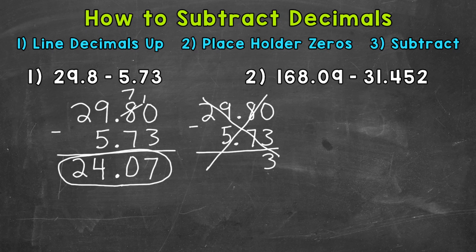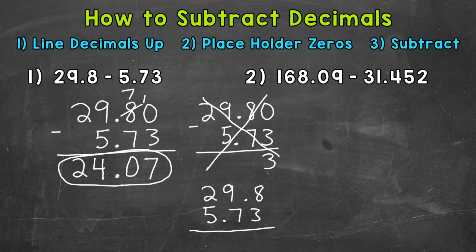The other mistake would be lining the problem up by lining up the digits instead of lining up the decimals. You can see that the decimals aren't lined up — we have three digits above three digits. Remember, line the decimals up. This will not give a correct answer.